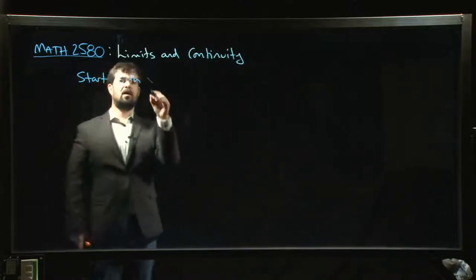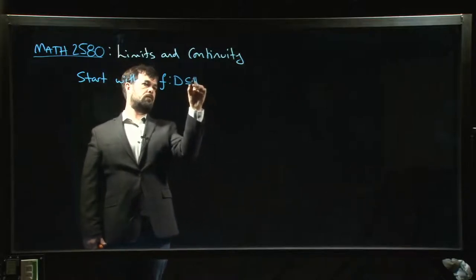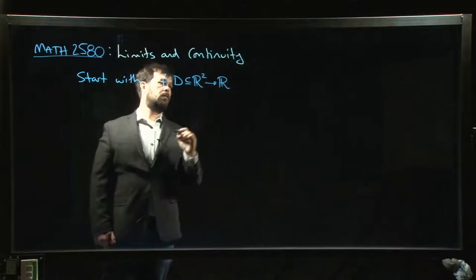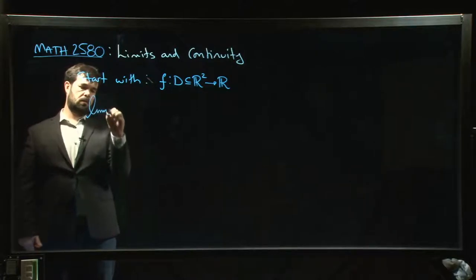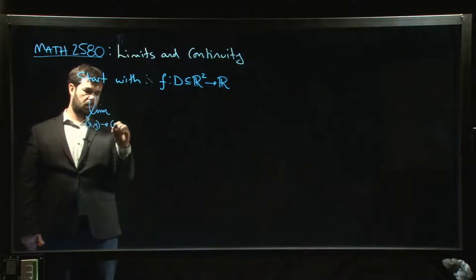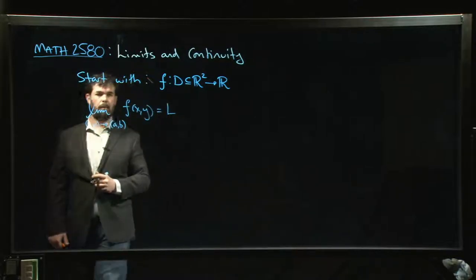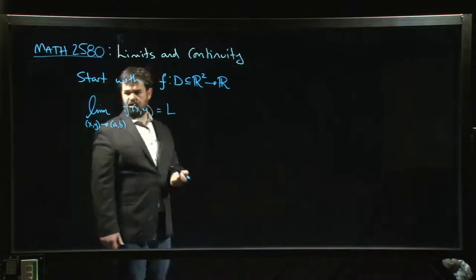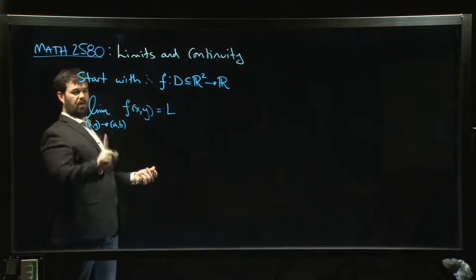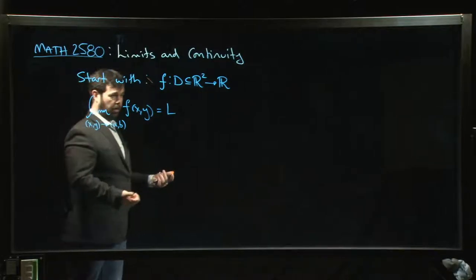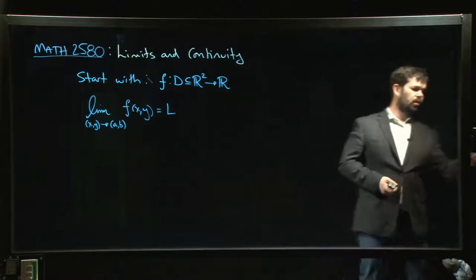Most of the limit problems you see are going to fall into this case. Let's say we have a function f defined on some domain D in the plane, taking values in the real numbers — so it's a real-valued function. In this context we write something like this: the limit as the point (x, y) approaches a point (a, b) of f of x, y equals L. It's pretty much the same limit notation you're used to; the only thing that changes is now your function depends on two variables rather than one, so we're dealing with points in R² rather than R.